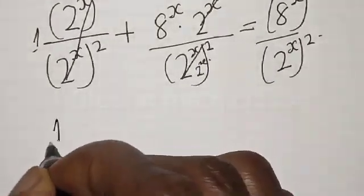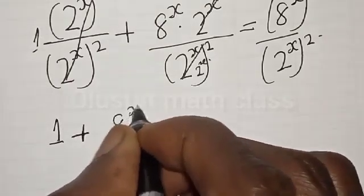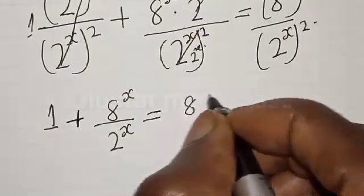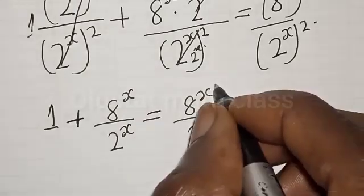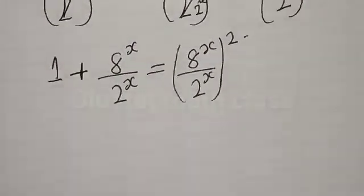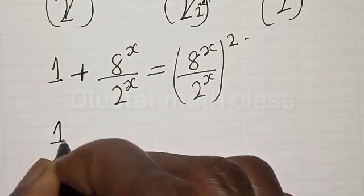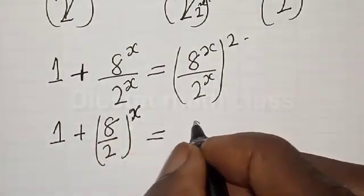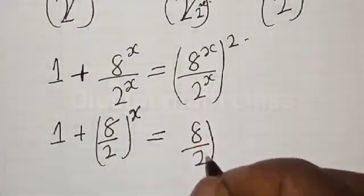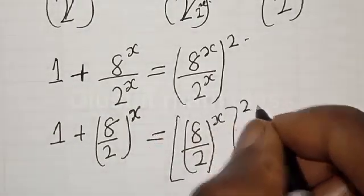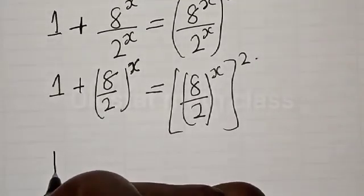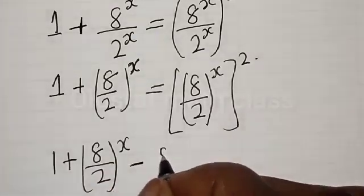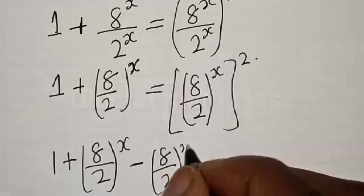We have 1 plus 8 raised to power s divided by 2 raised to power s, is equal to 8 raised to power s divided by 2 raised to power s, all squared. The whole equation can be rewritten as 1 plus 8 divided by 2, raised to power s, is equal to 8 divided by 2, raised to power s, all squared.